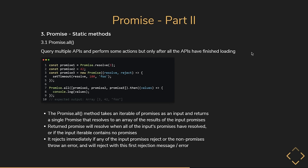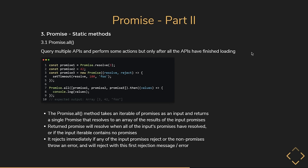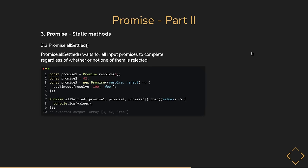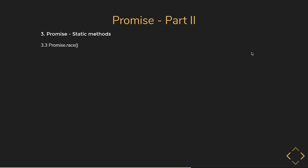Promise.all takes an iterable of promises and returns a single promise that resolves to an array of results of the input promises. The returned promise resolves when all input promises have resolved or the input iterable contains no promises. It rejects immediately if any input promise rejects, with the first rejection message or error. A slight variation is Promise.allSettled, which waits for all input promises to complete regardless of whether any are rejected.